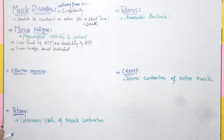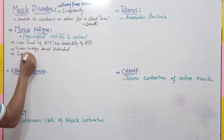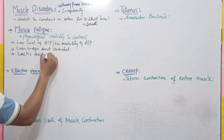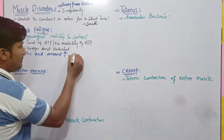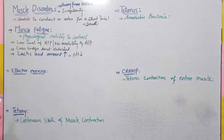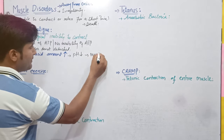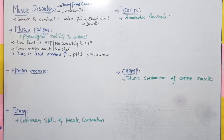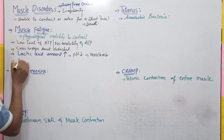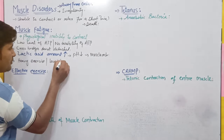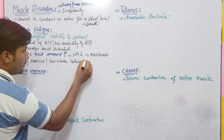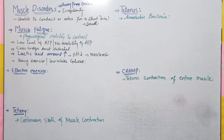Muscle fatigue ki wajah se: jab aap bahut zyada exercise kar lein ya muscles ko bahut zyada kaam kara liya ho, us condition mein lactic acid ki amount muscle cells ke andar badh jaati hai. Jis ki wajah se muscle ki pH low ho jaati hai. Yeh low pH muscle lag karti hai, muscle mein pain start ho jaati hai — isko hum muscle fatigue kehte hain. Aisa tab hota hai jab heavy exercise ho ya low glucose intake ho.